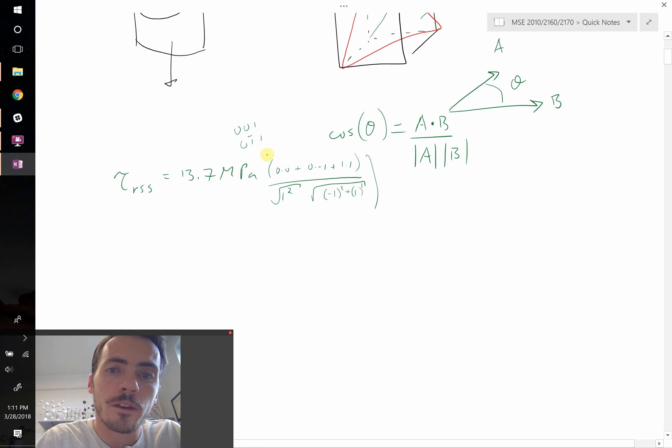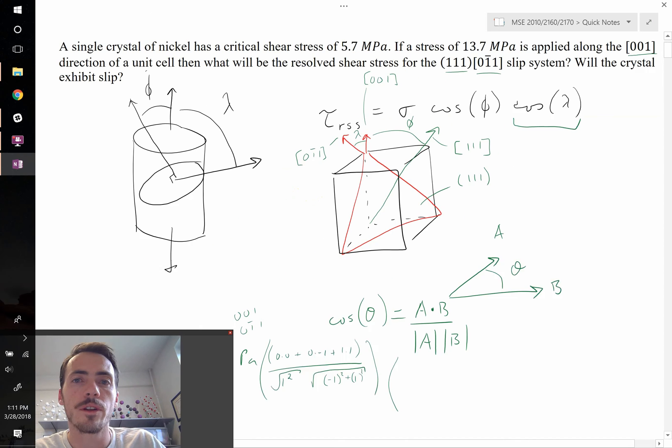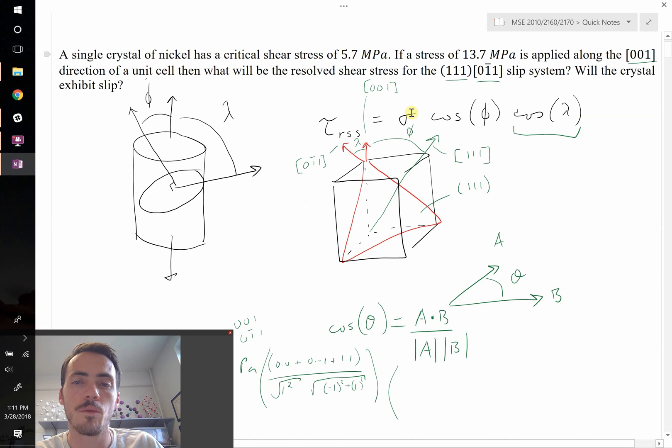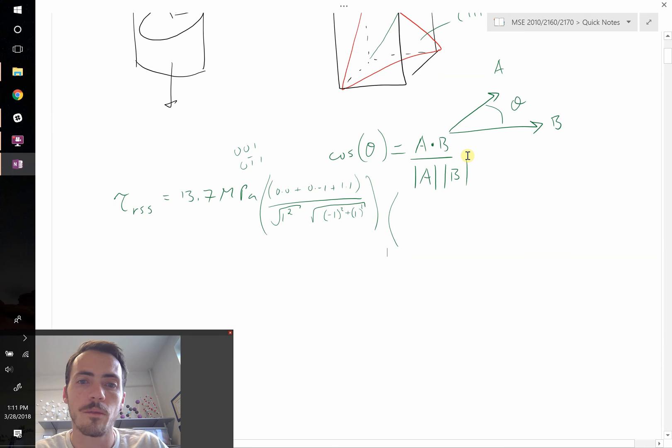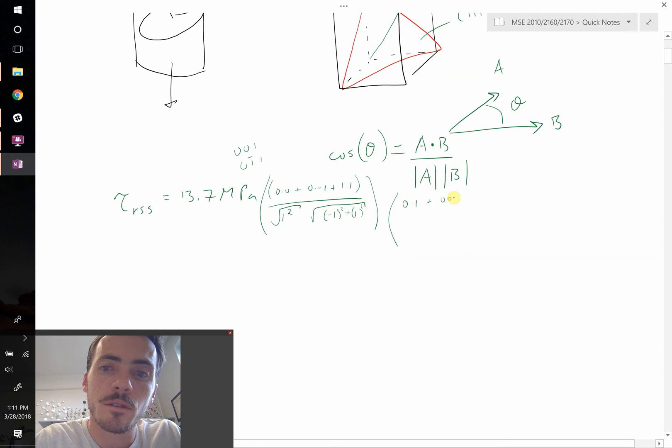This is all going to be multiplied by the dot product of the loading direction, which is still [001], but now the normal to the slip plane, which is [111]. We're going to end up with 0 times 1 plus 0 times 1 plus 1 times 1, so this is 1 in the numerator. In the denominator, we have 1 times √3, just 1² + 1² + 1².